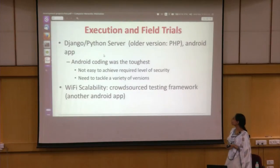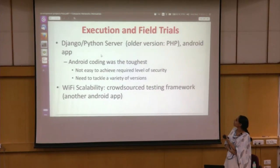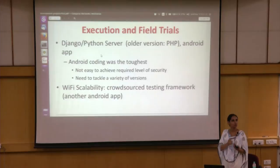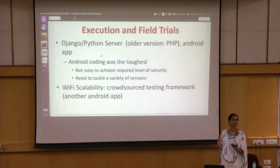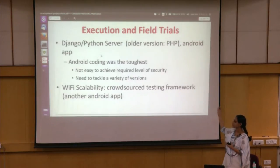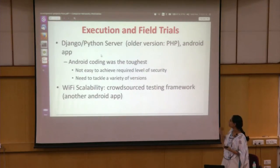SAFE is built on Django/Python server — we had an older PHP version but moved to this for scalability. The Android coding was one of the toughest parts because you need extensive logging information, but Android is not designed for that and hides many things. API versions keep changing so we have to revisit what's exposed. We also developed a crowdsourced Android app where students volunteer their phones in a lab setting to test Wi-Fi scalability of access points.